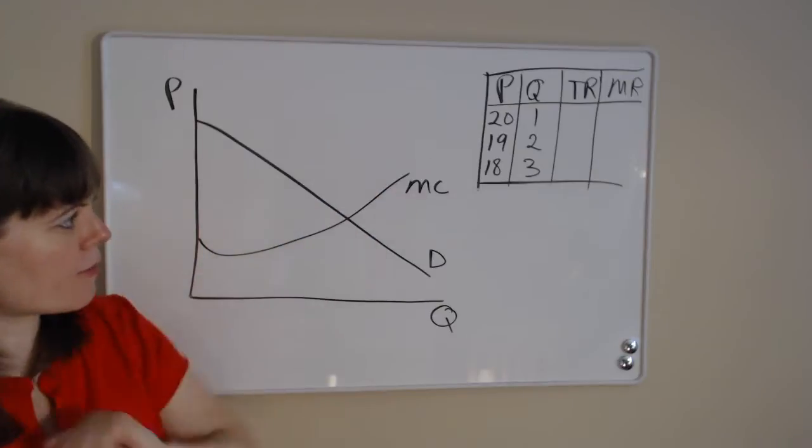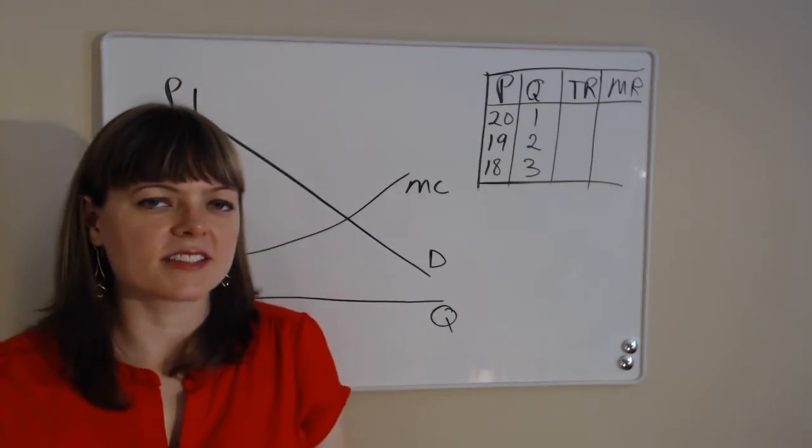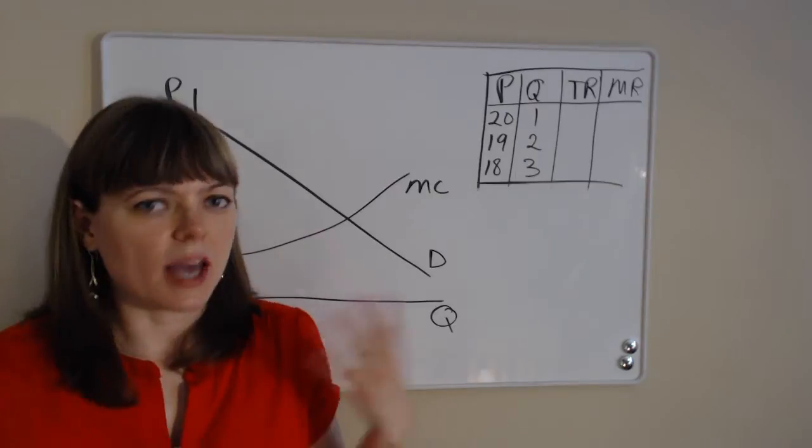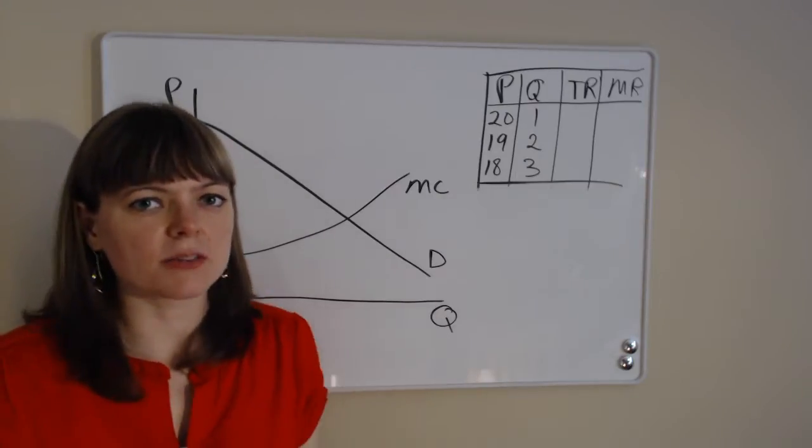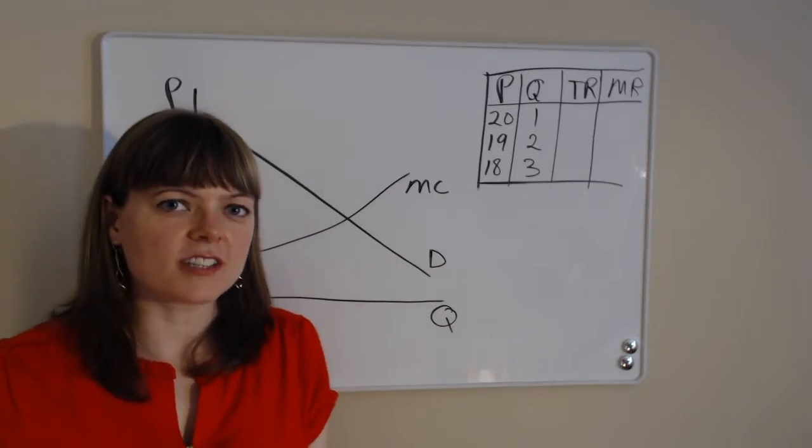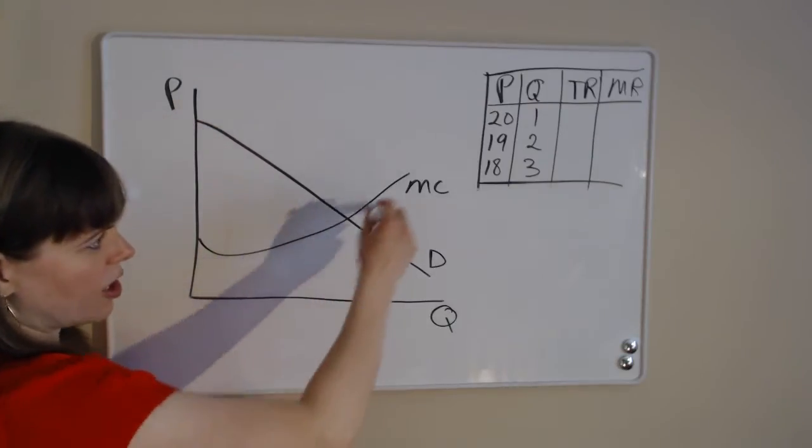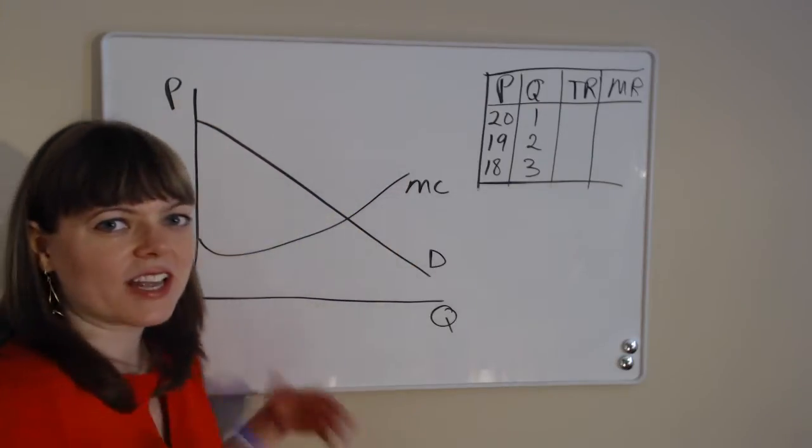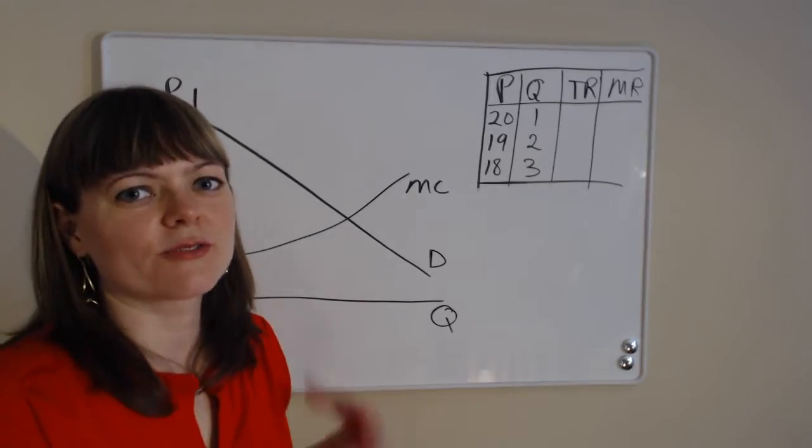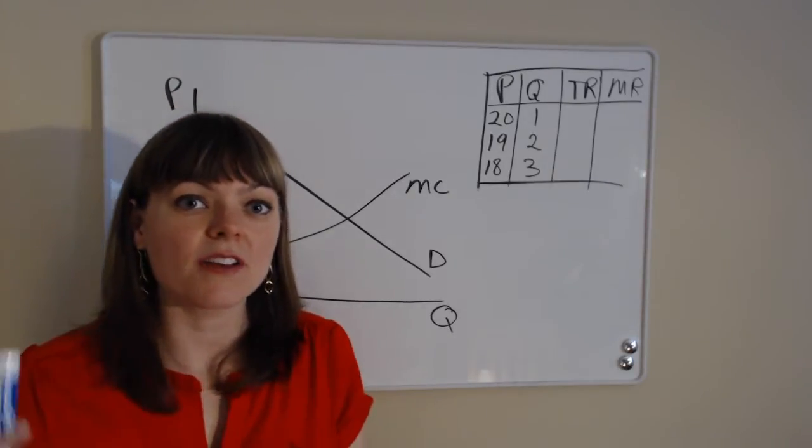We also have a marginal cost curve, and you can think of that as, for every unit that the company produces, if it's cupcakes, they need a little bit of sugar and a little bit of flour. So there's this marginal cost of producing every unit of an item. And the marginal cost always has this upward shape, there's increasing marginal cost, for reasons that I can explain elsewhere, if you would like to know.